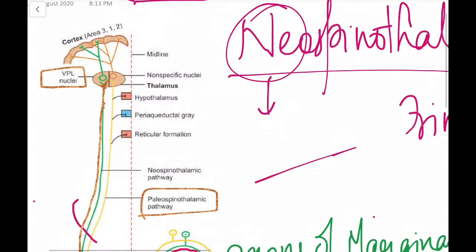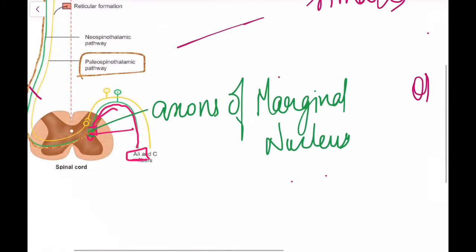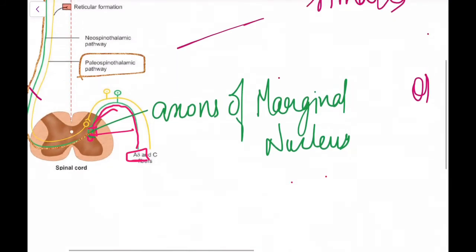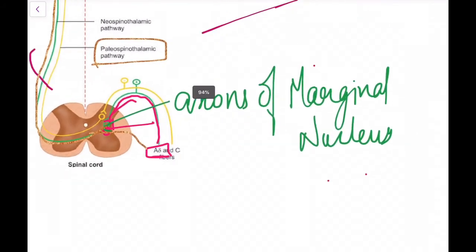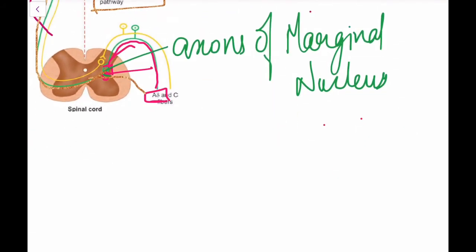The second-order neurons terminate in the ventroposterolateral nucleus of the thalamus. From there, third-order neurons arise and terminate in area 3-1-2 of the cortex.